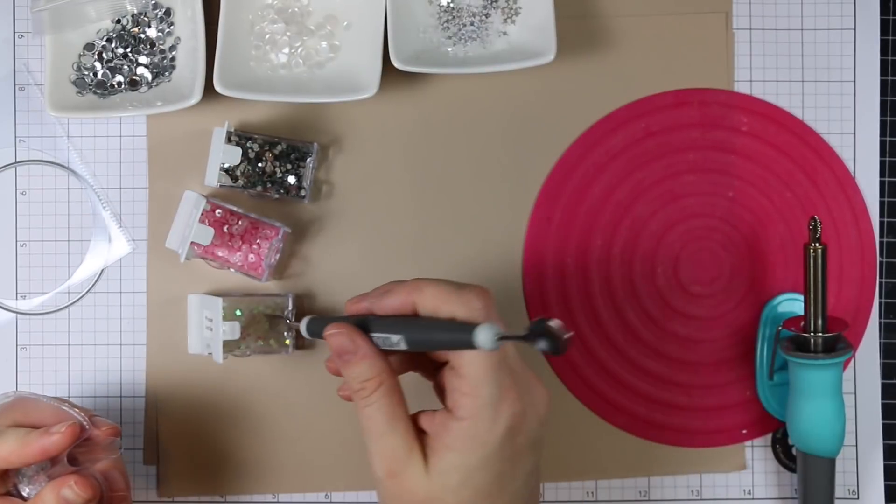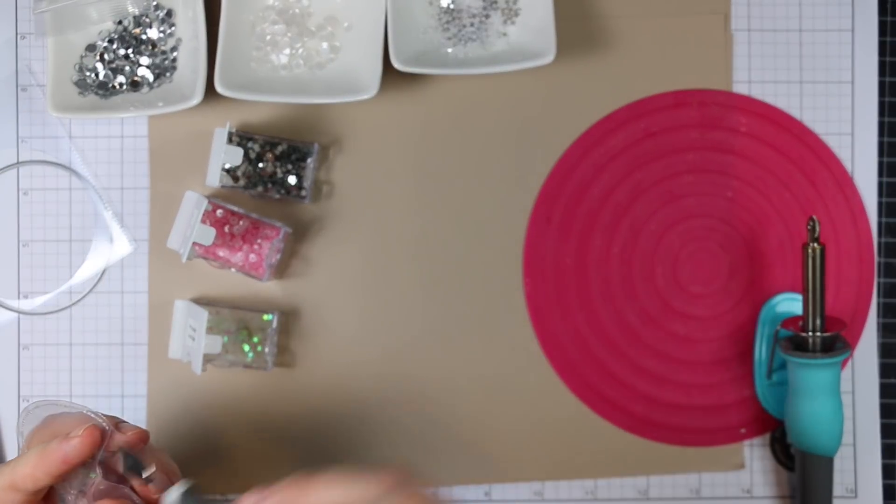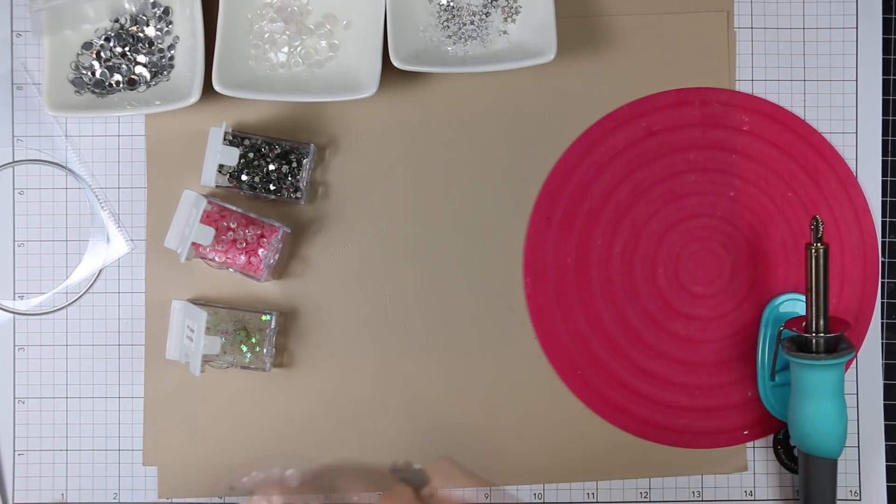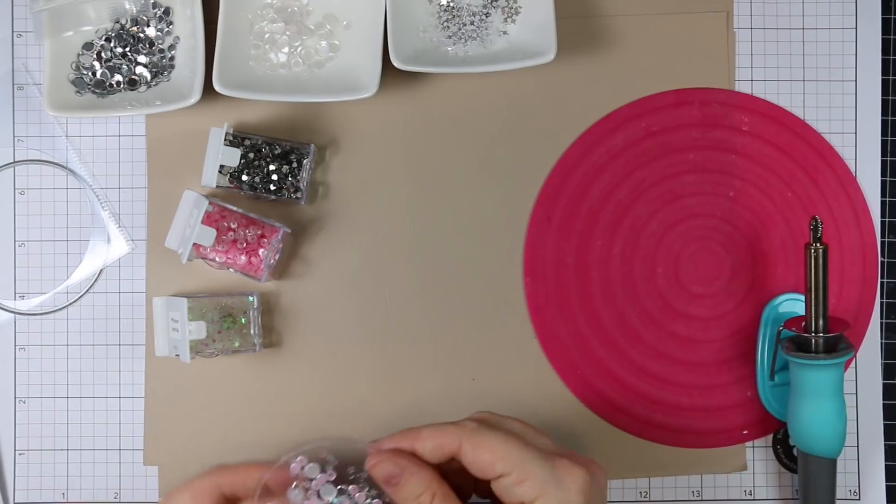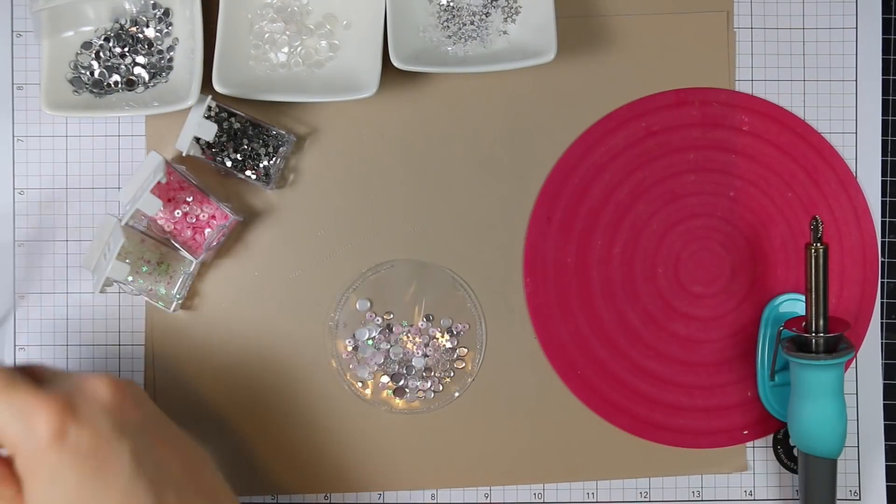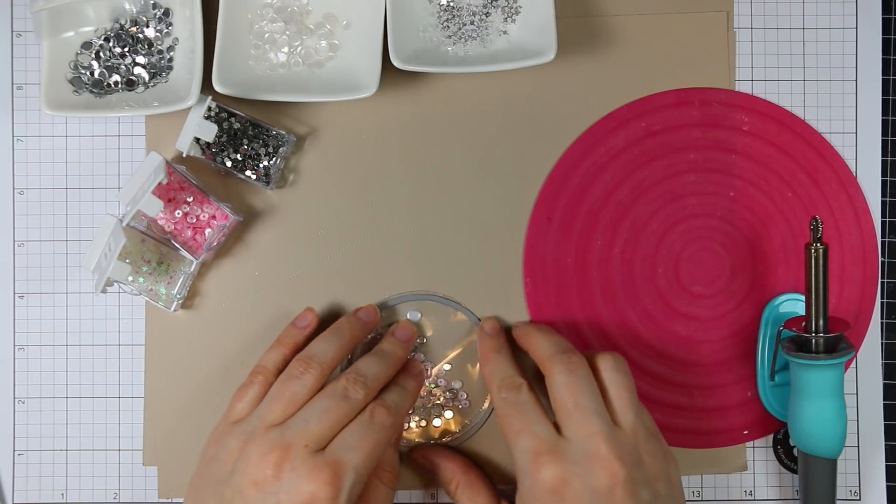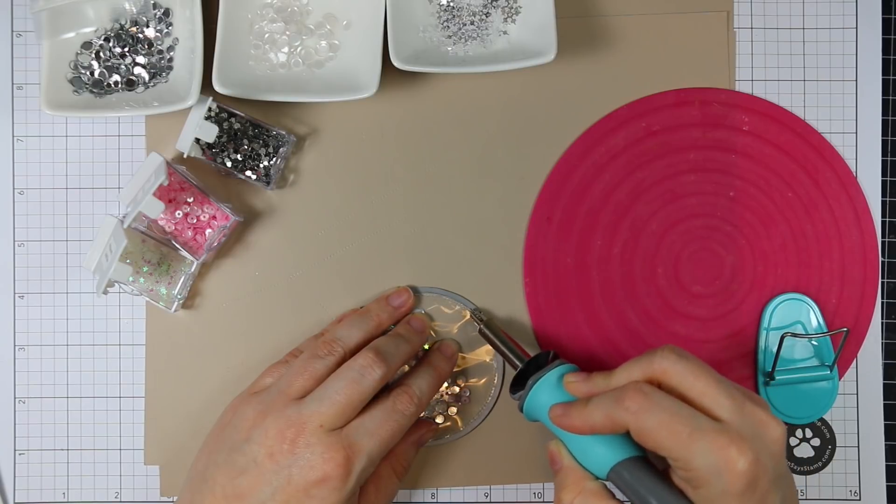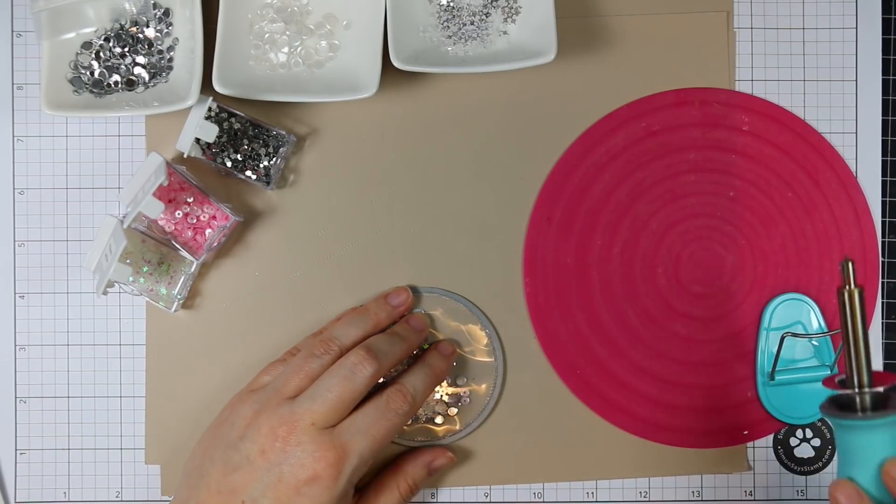Then I decided I needed more shimmer and a little bit of color, so I pulled out the silver confetti hearts, some pink blush four millimeter sequins because for some reason I happen to have like two or three packs of those, and some iridescent confetti stars. I'm using my little Tonic craft spoon to kind of spoon those into this shaker pouch.